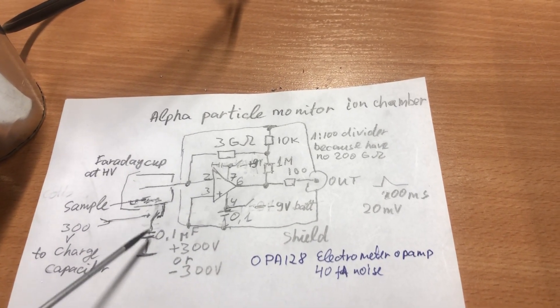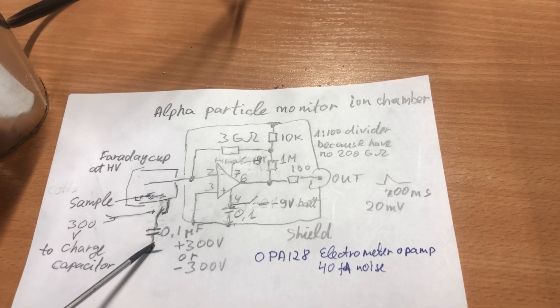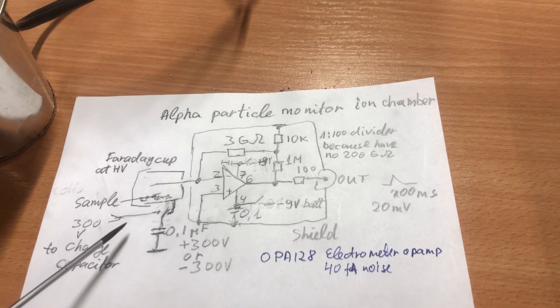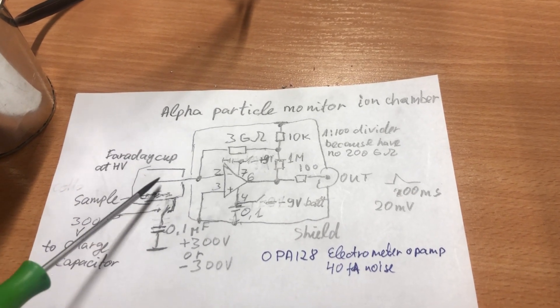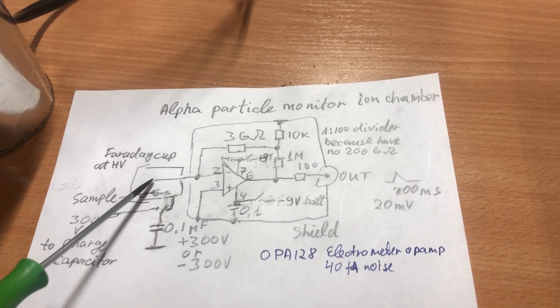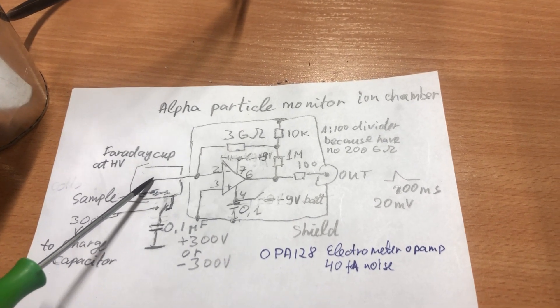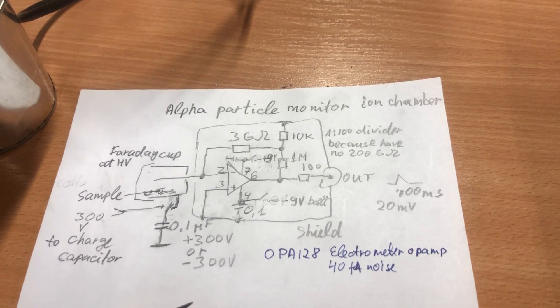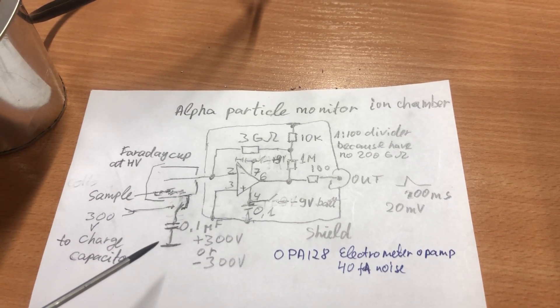Faraday cap is at high voltage, 300 volts, so it is dangerous to touch. Should be careful not to touch the middle wire to the Faraday cap wall. That will electrocute the amplifier.